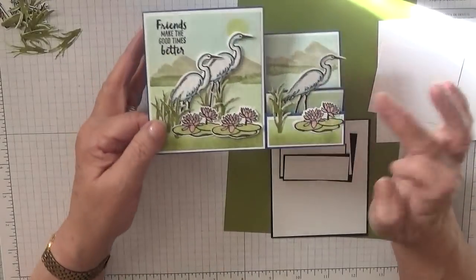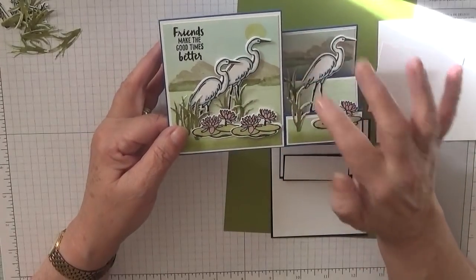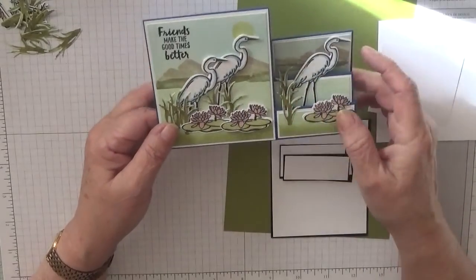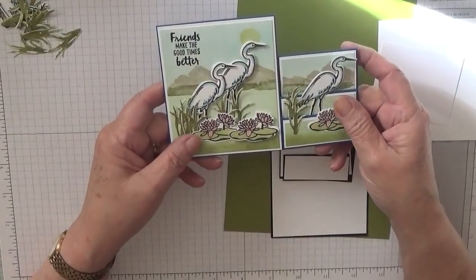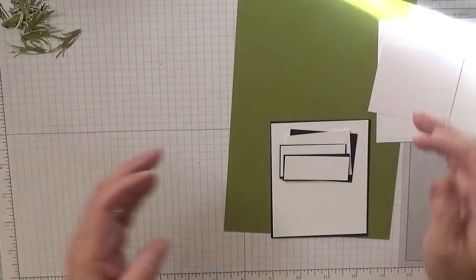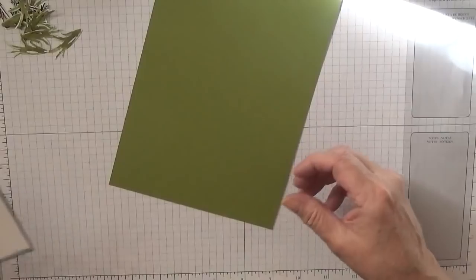All the birds and the lily pads and the reeds I've already cut out and done, but I will stamp one of each so that you can see what I did. So we'll put that to one side and we'll cut the card first.